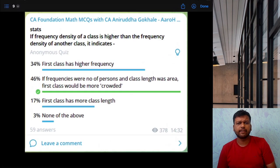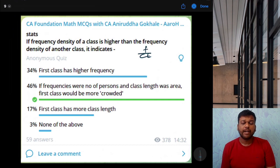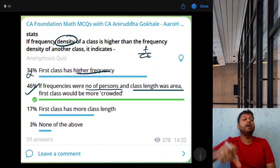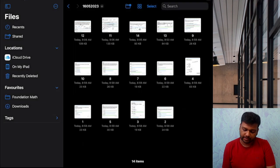If frequency density of a class is higher than frequency density of another class, frequency density means how crowded is the class. Frequency upon class length. It indicates that first class has higher frequency. This is wrong because we don't know what is class length. If frequencies were number of persons and class length was area, first class would be more crowded. That is correct because density itself means measuring how crowded something is.